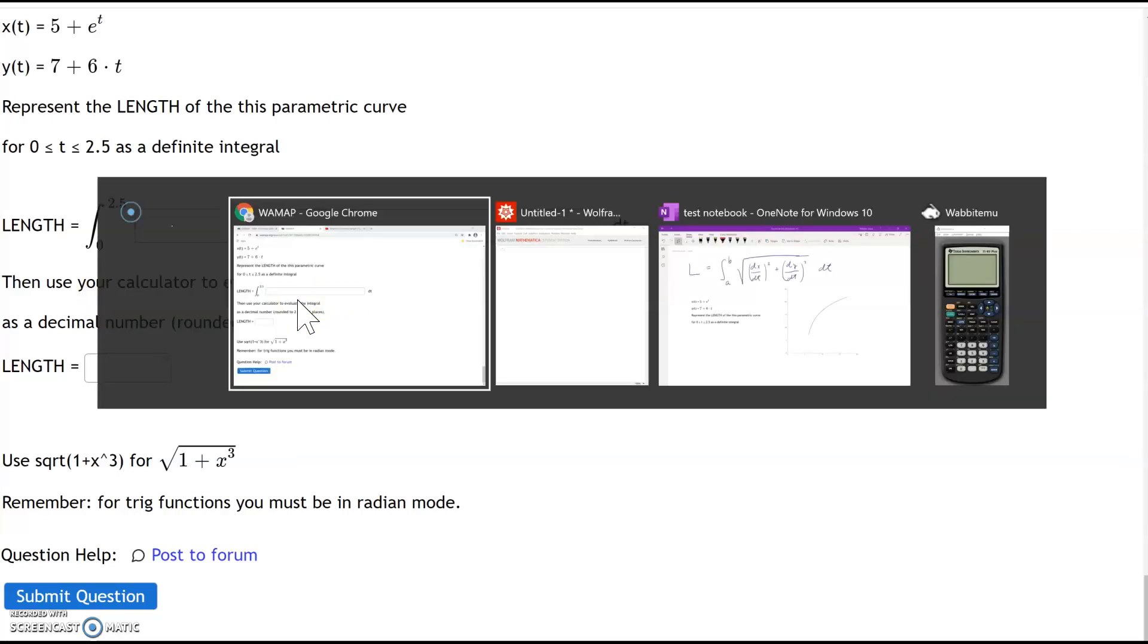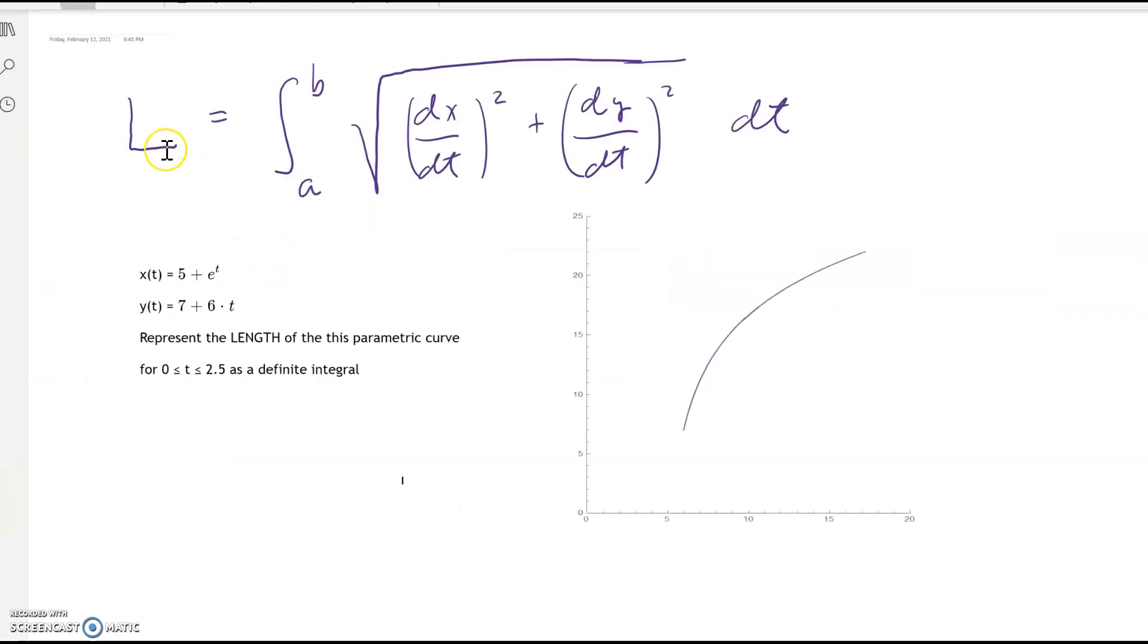So for convenience I already wrote the arc length formula right here: integral from a to b of the square root of dx/dt squared plus dy/dt squared times dt. And I also copied the question right here, and for reference I graphed the parametric curve right here.